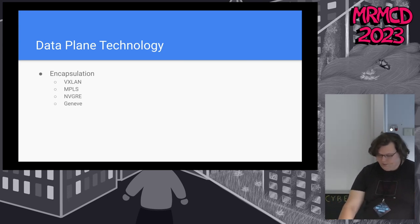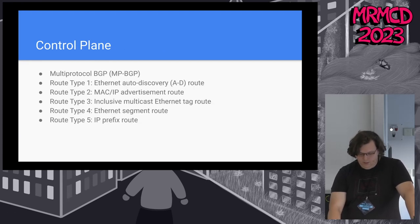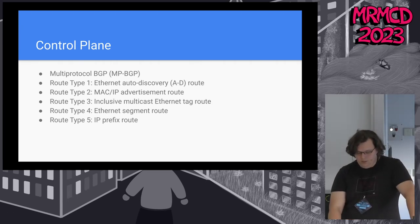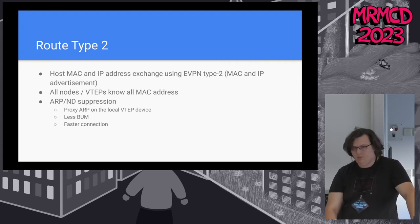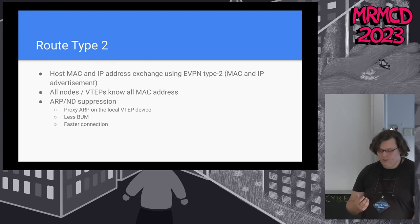For data plane technologies, most people use VXLAN for EVPN, but it's also possible to use, for example, GENEVE or MPLS as the transport protocol. The control plane has multiple route types, which are all communicated over BGP. The most important one is route type 2 — that's where information about MAC addresses and IP addresses is communicated between all connected EVPN nodes.